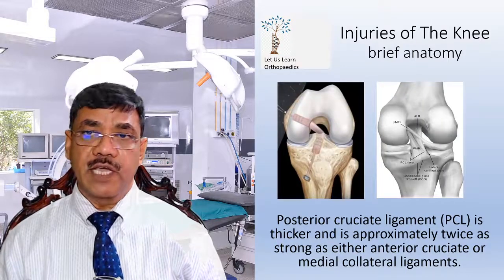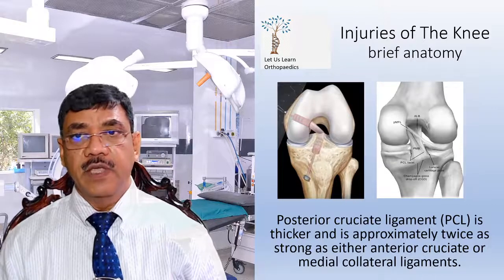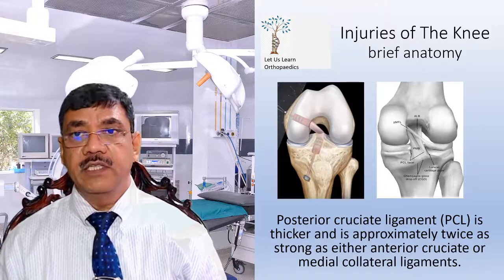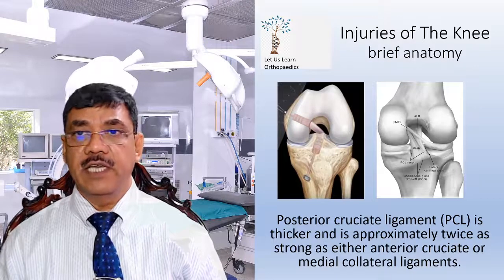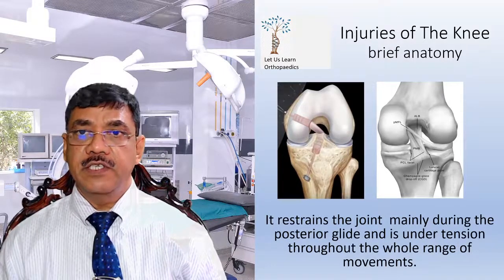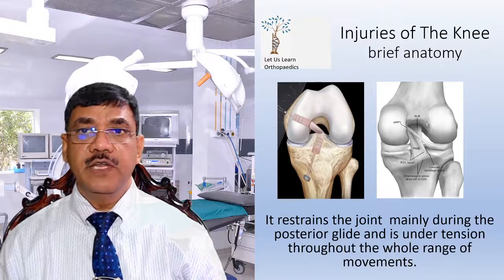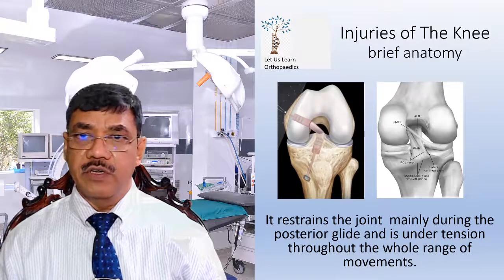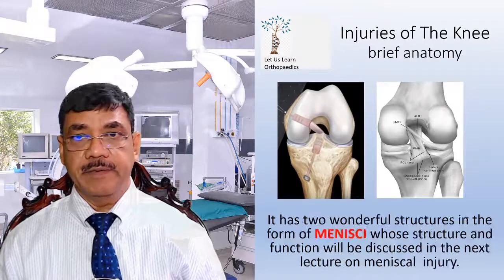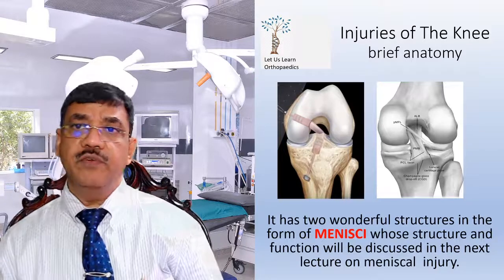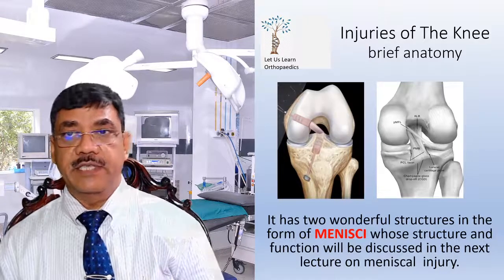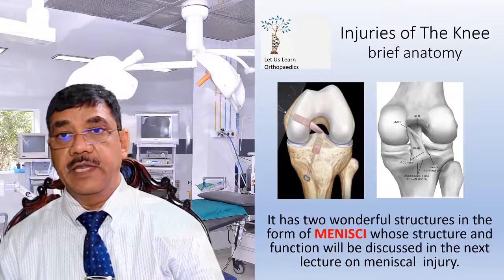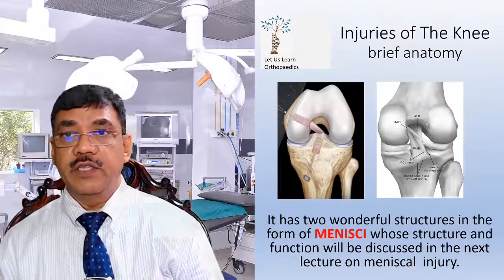The posterior cruciate ligament, PCL, is thicker and is approximately twice as strong as either the anterior cruciate or the medial collateral ligament. It resists the joint mainly during posterior glide and is under tension throughout the whole range of movement. The knee also has two wonderful structures in the form of menisci, whose structure and function will be discussed in the next video lecture on meniscal injuries.